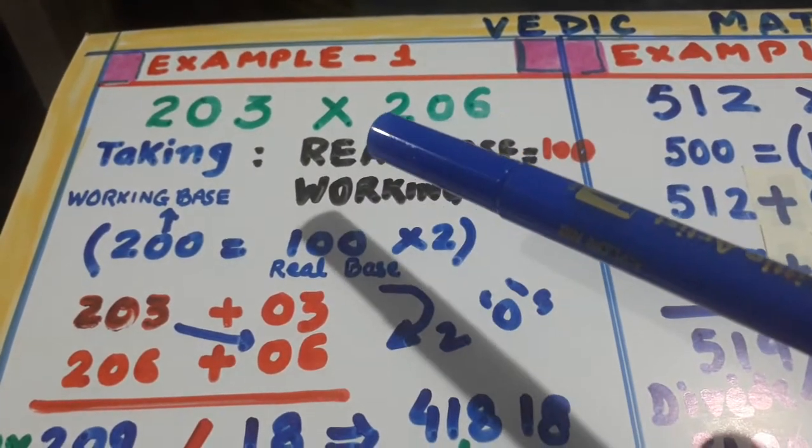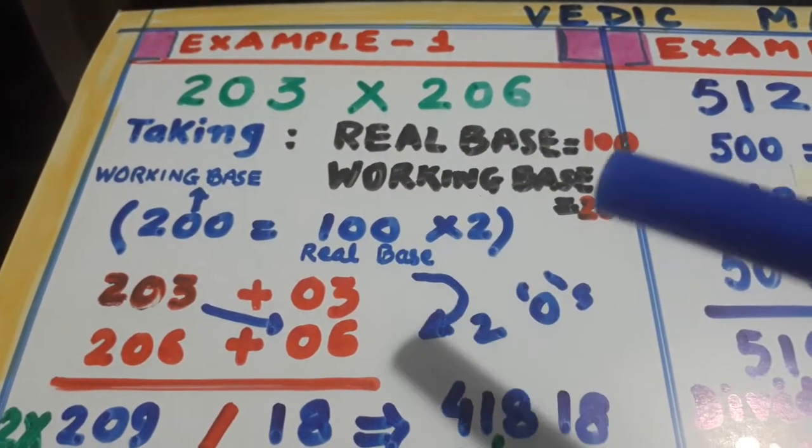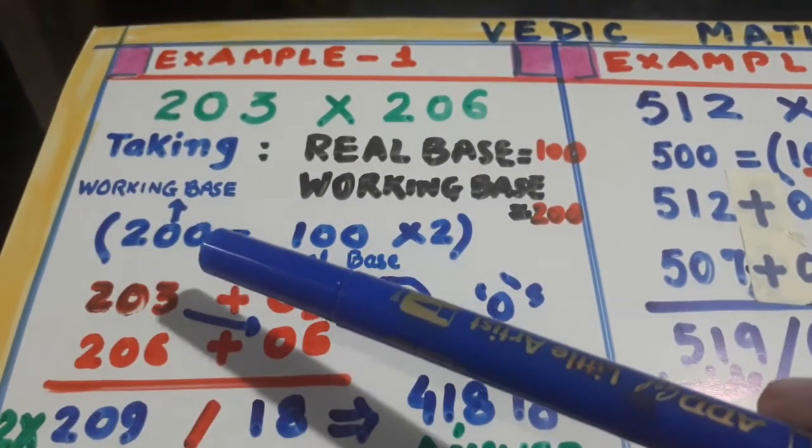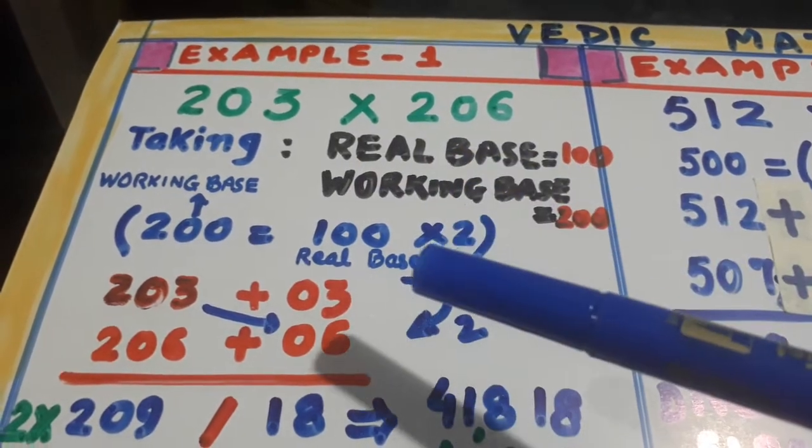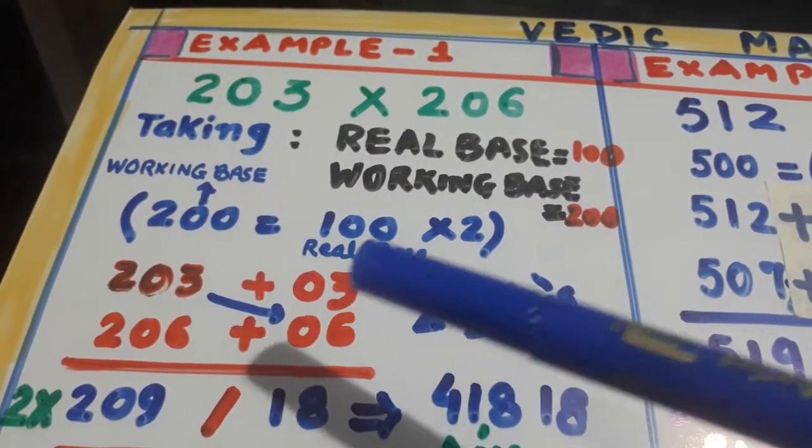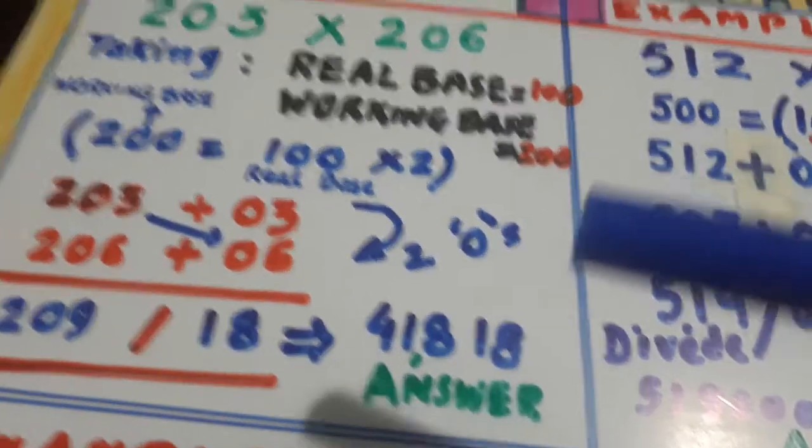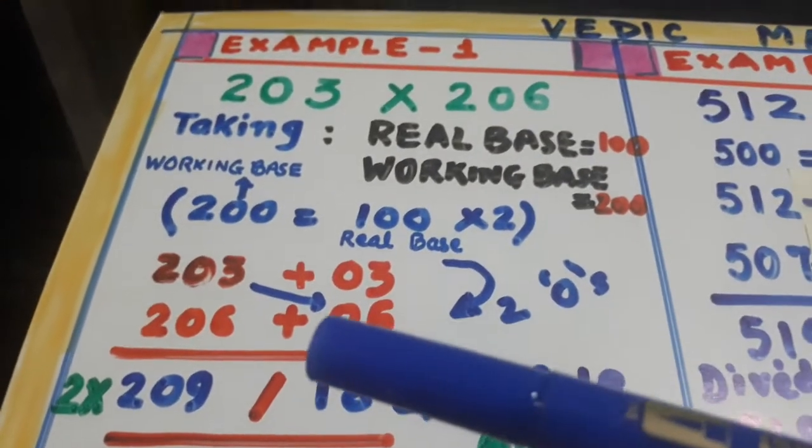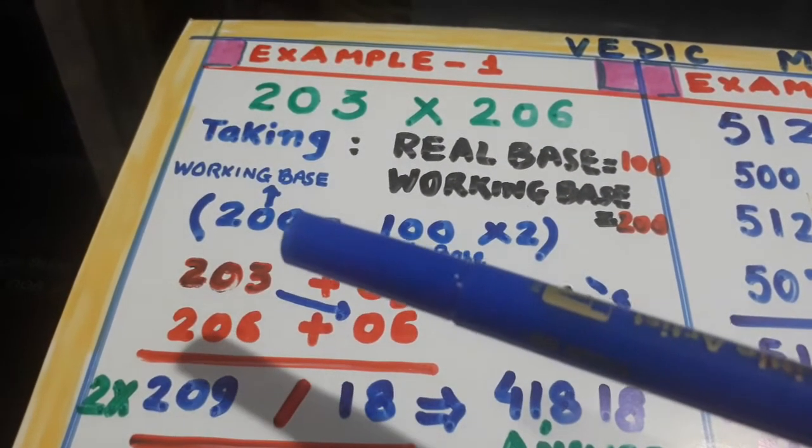First example is 203 multiplied with 206. Here the working base take it as 200 and the real base is 100. So 200 is equal to 100 into 2. So now this 203 is 3 more than 200, our working base.